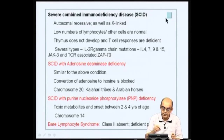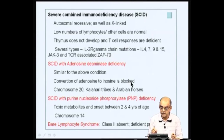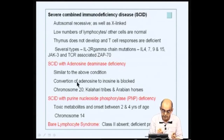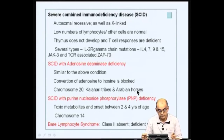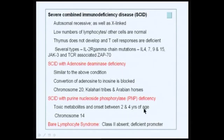You also have SCID with adenosine deaminase (ADA) deficiency, where the conversion of adenosine to inosine is blocked. As a result, several toxic chemicals accumulate within the cell, leading to non-development of cells which need adenosine deaminase. The gene is found in chromosome 20, and many of these deficiencies are found in Kalahari tribes and in Arabian horses. In addition, there is SCID with purine nucleoside phosphorylase (PNP) deficiency, where toxic metabolites also accumulate and onset occurs between 2 and 4 years of age, with the gene found in chromosome 14.